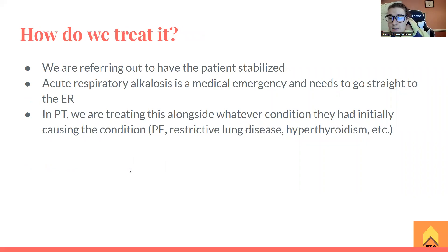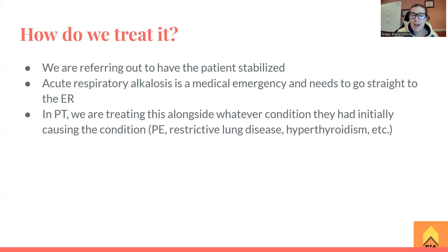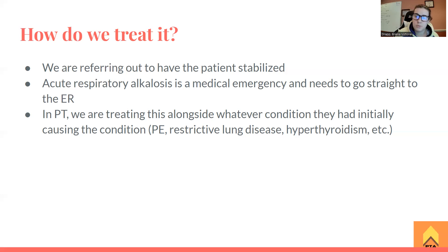How are we treating it? Same kind of condition as respiratory acidosis. We're going to let this patient be stabilized if they're in an acute episode of respiratory alkalosis. Any sort of acute respiratory distress, we're sending them to the ER. They're going to get whatever they need to calm everything down and get the blood back to normal. In physical therapy, we're treating the patient alongside whatever condition they have — restrictive lung disease, hyperthyroidism, Graves' disease, or pulmonary embolism. Note that pulmonary embolism is a medical emergency, but I'm talking about the aftercare.